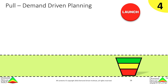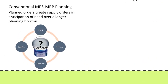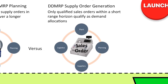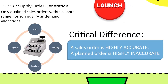Demand-driven planning is the fourth component of DDMRP. In DDMRP, planning is the process of generating supply orders. In order to do that, DDMRP uses a unique equation. The demand element of that equation has no forecasted orders. Conventional MRP planning uses planned orders derived from forecasts to generate orders in anticipation of need over a longer planning horizon. DDMRP uses only qualified sales orders within the immediate range horizon as demand allocations. A critical difference is in the quality of the demand signal — a sales order is highly accurate, an explicit statement of what will be consumed, while planned orders are highly inaccurate.